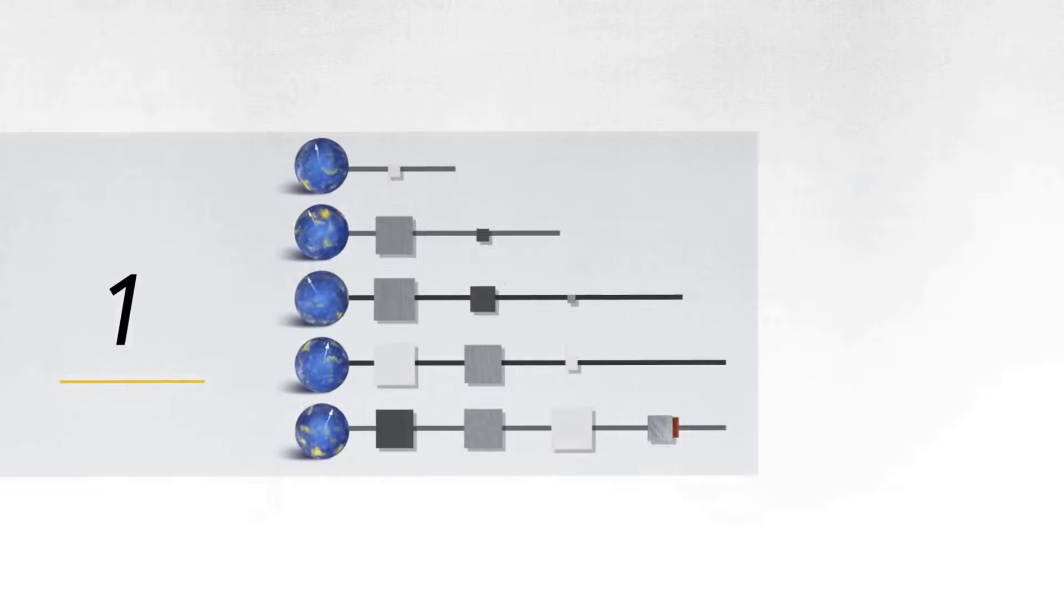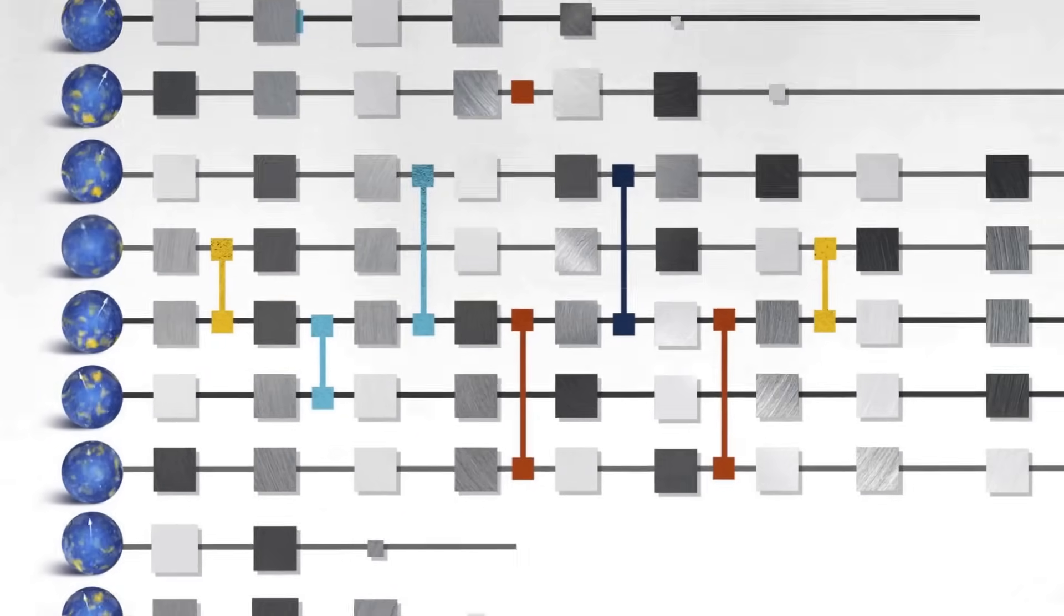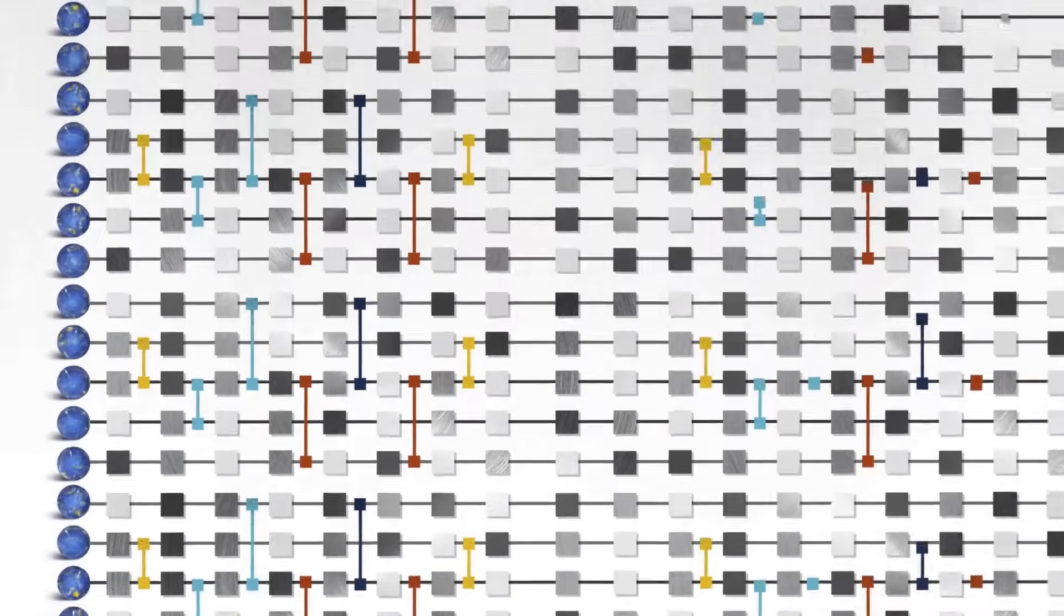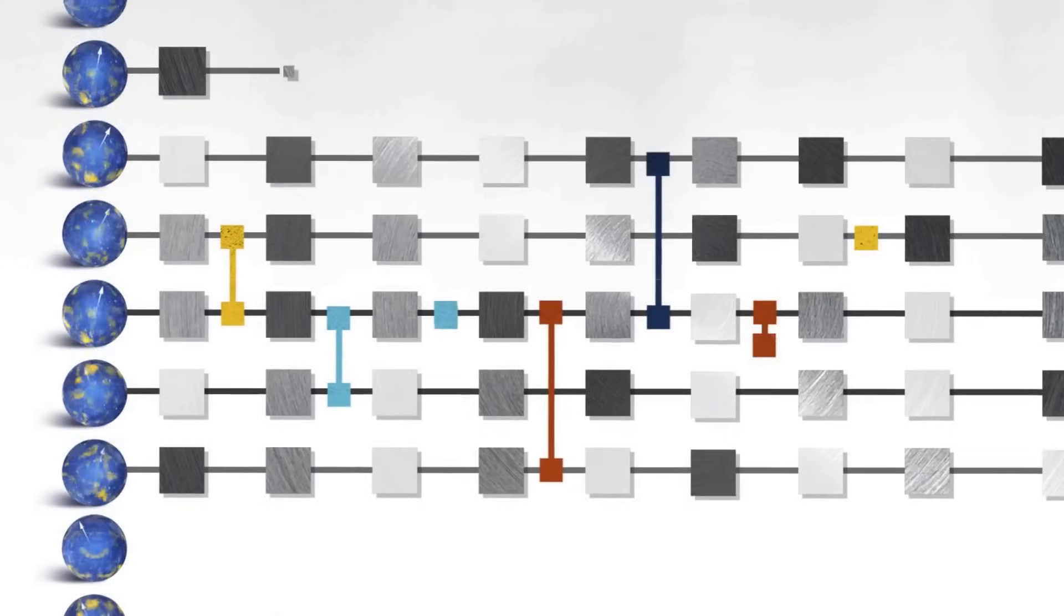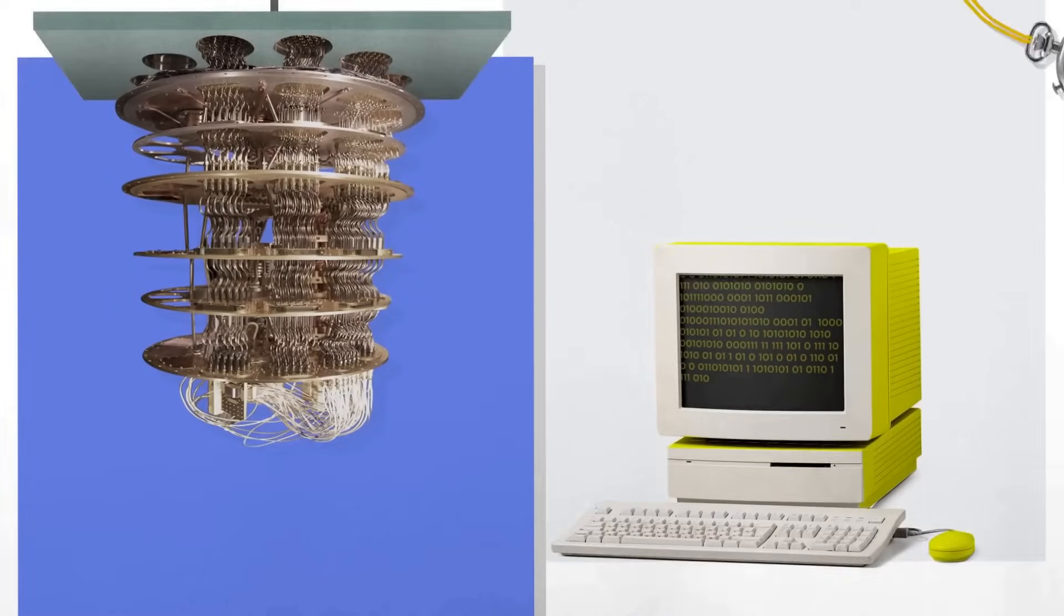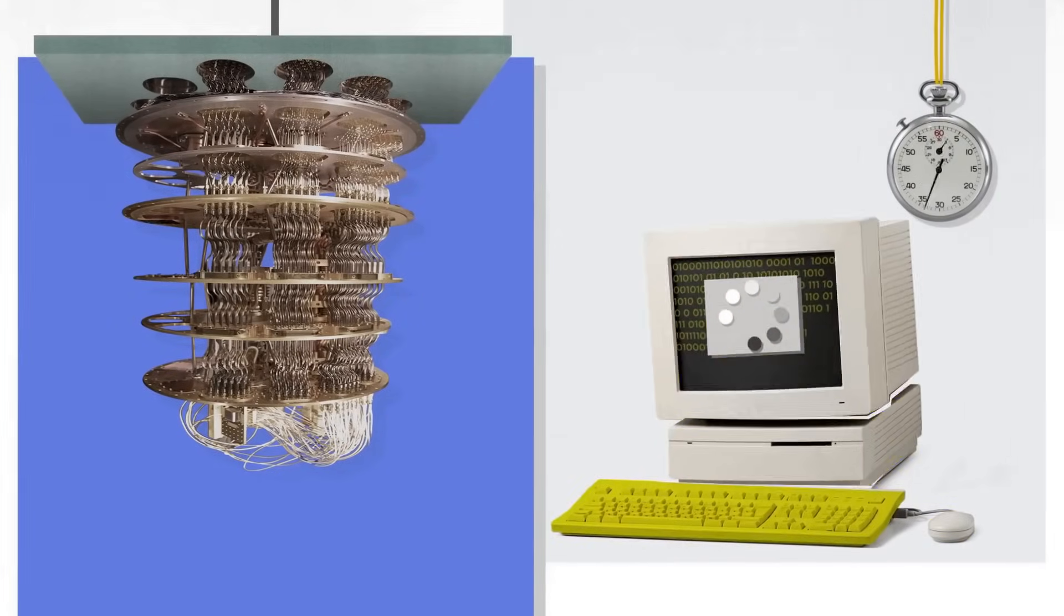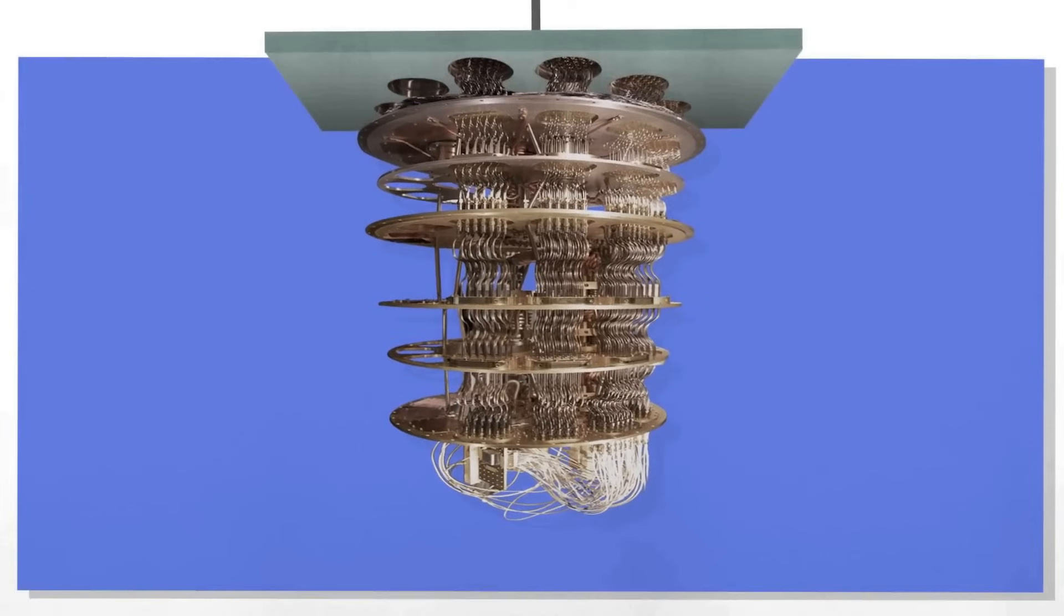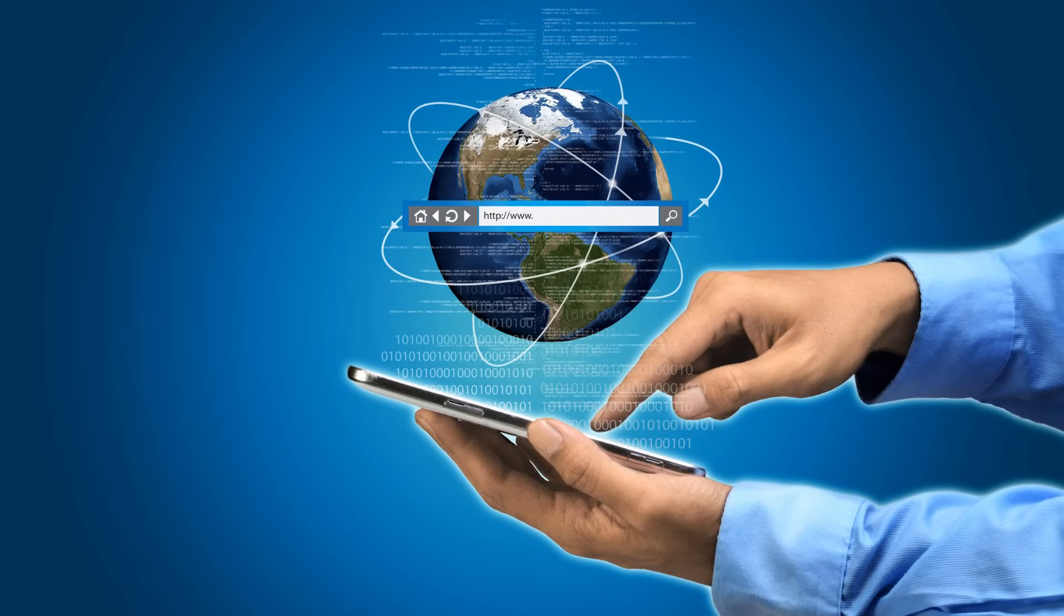But here is what we need to understand. Random circuit sampling is not a real-life task. Instead, RCS is a benchmark problem specifically designed to measure the capacity of quantum computers. It is not the kind of problem classical computers are ever required to solve in practical applications. So even if a quantum computer solves RCS extremely fast, it does not mean it can speed up the kinds of tasks that classical computers handle daily like running your computer, smartphone, or the internet.